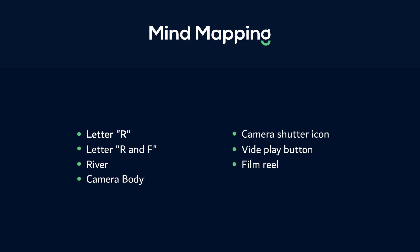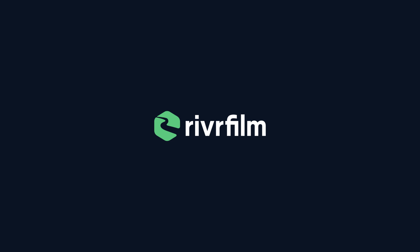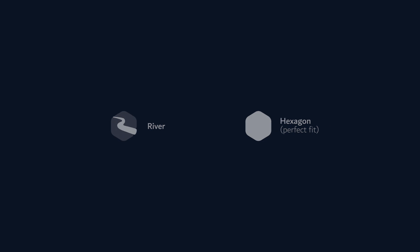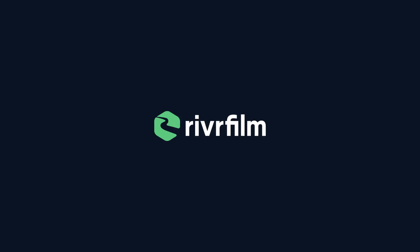I decided to incorporate geometric shapes like a square, circle, or hexagon. These shapes are also common, but I think they will differentiate the logo from the rest of the studios. So I decided to use the combination of river and the geometric shape of a hexagon. After sketching different designs, this was the finalized version — a combination of river and a hexagon. You can also share your thoughts about the design in the comments section.